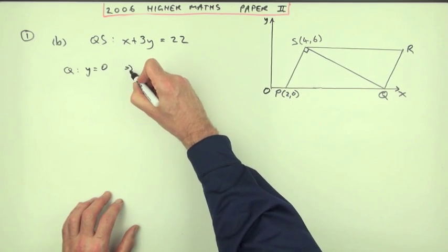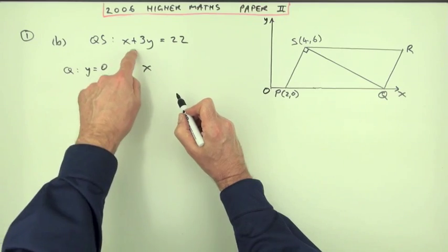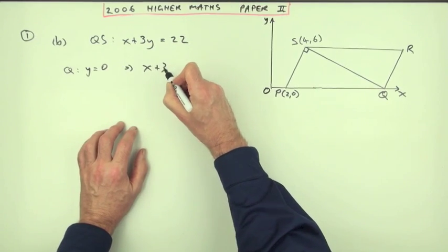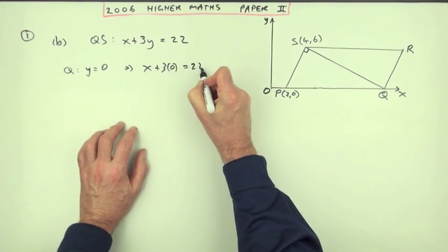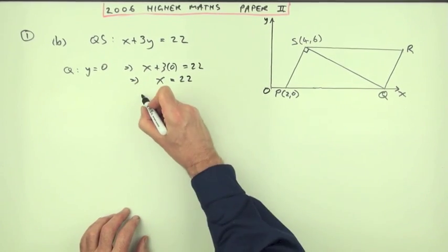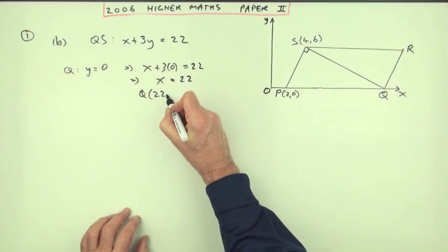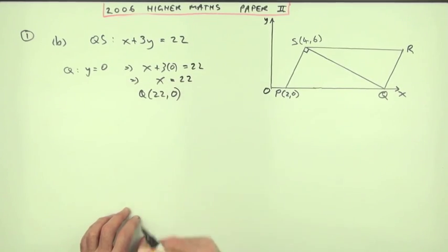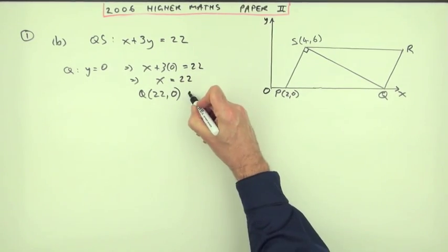Well, putting that into that straight away, that would say x plus 3y. So if you like, I could put the working x plus 3 lots of 0 is 22. That means the x-coordinate is 22. So Q is the point 22,0. That's the mark.